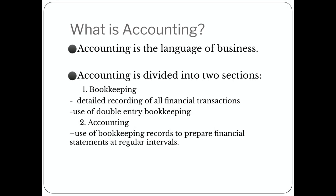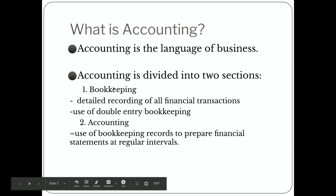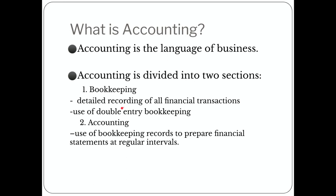The first section is called bookkeeping, which means the detailed recording of all financial transactions and the use of double entry bookkeeping. If you look at this word, there are two familiar words: 'book' and 'keep.' So one section of accounting is to keep books — to keep records of all transactions happening in the business.